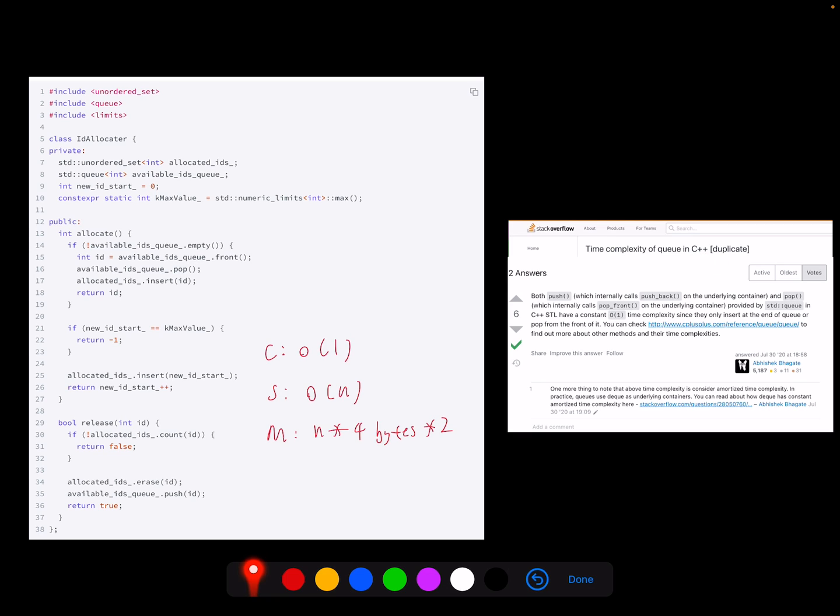So I would say in the usual case, we can assume the queue for push and pop complexity is big O of one, but you can check more details by searching this Stack Overflow topic: time complexity of queue in C++. If I assume it's one, then the allocate and release computation is all big O of one. The space complexity, because we open two containers which can be the maximum ID, it's big O of N.